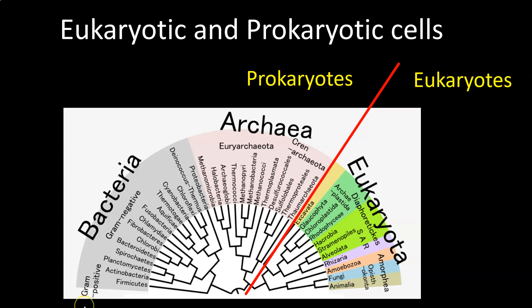What you can clearly see through this mapping technique is that cells fall under three main domains of life. Cells can be bacteria, they can belong to the Archaea family, or they can belong to the Eukaryota family. All the cells I've been talking about so far — animal cells and plant cells — have belonged to the Eukaryota family, so they're all eukaryotes.